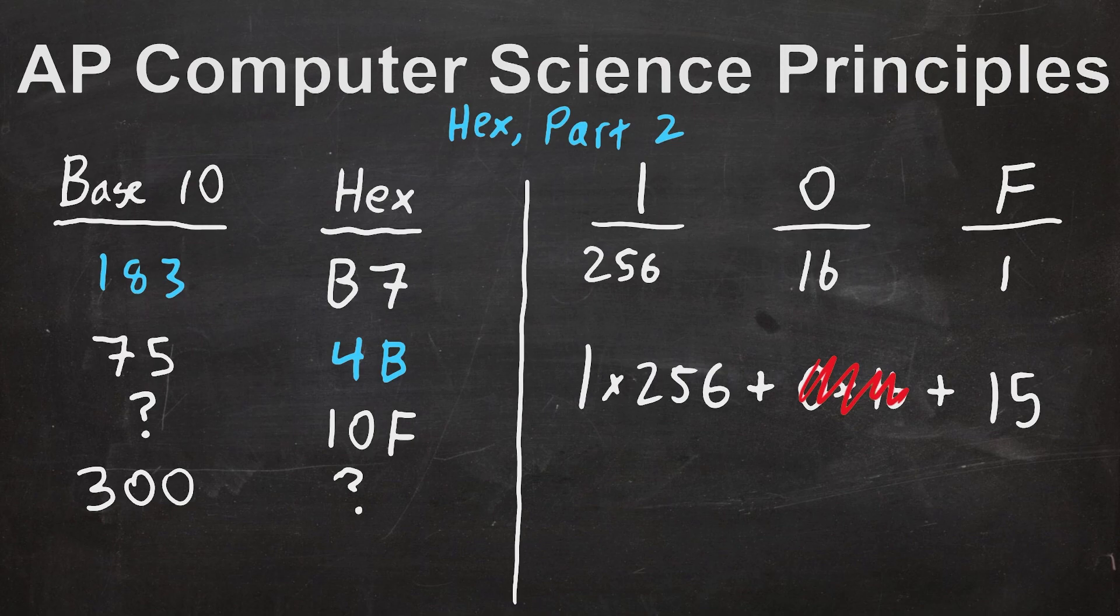So now that we know that we have one 256 and 15 ones, all we have to do is add them together. 256 and 15. 6 and 5 is 11, 5 and 10 and 10 is 70, and 2 is just 2. So we get 271 for our final answer.